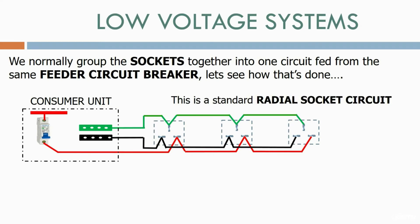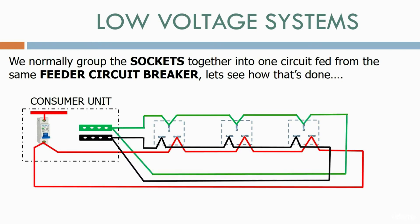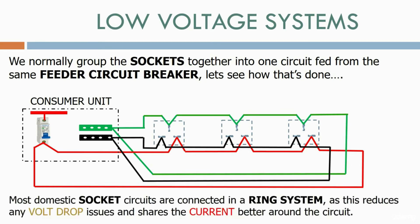To turn a radial socket circuit into a ring socket circuit, we simply loop back the live, neutral, and ground wires to the consumer unit. We now have a ring system with power flowing into the loop from both directions at the same time. Most domestic socket circuits are connected in a ring system, as this reduces any volt drop issues and shares the current better around the circuit.